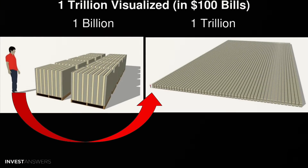Let me give you a visualization of what a trillion dollars looks like. On the left you can see a big pile of hundred-dollar bills — there's a human in a red t-shirt to give you scale — and that's one trillion dollars. It's like a number of football fields full of hundred-dollar bills stacked four feet high. Two trillion is twice that, and that's roughly what we've added as a deficit this year.